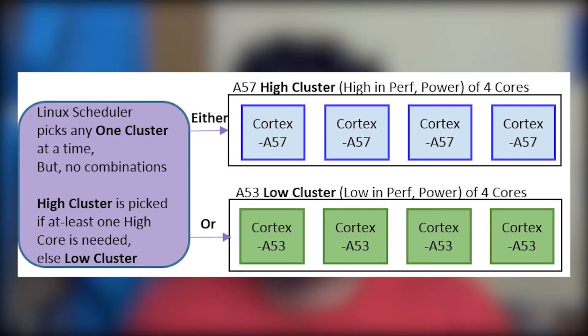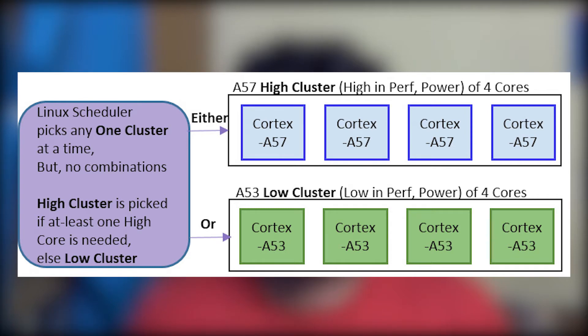Before going further, let's look at the different task scheduling methods implemented in the big.LITTLE multiprocessing architecture. The first is cluster switching. In this model, processors are arranged into identically sized clusters of big or little cores, and the OS scheduler can only see one cluster at a time. When the overall load changes between high and low, the system transitions to the other cluster — all relevant data passes through the common L2 cache, the first cluster is powered off, the other is activated, and a cache coherent interconnect (CCI) is used.